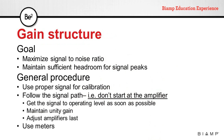Setting up proper gain structure has a very simple goal: maximizing the signal-to-noise ratio and maintaining sufficient headroom for signal peaks. The procedure is simple. First, use a proper signal for calibration, then follow the signal path — meaning we cannot start at the amplifier; we must start from the first gain stage. At that point, get the signal to operating level as soon as possible, maintain unity gain throughout the system, and adjust the amplifiers last. Throughout the system, use meters to ensure you're keeping unity gain.